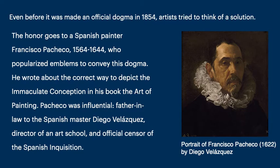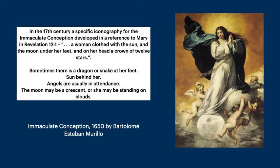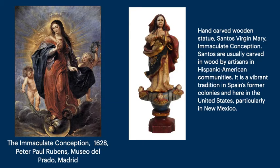Pacheco was very influential — the father-in-law to the Spanish master Diego Velázquez, director of an art school, and maybe even more importantly, official censor of the Spanish Inquisition. He said to communicate the idea of Immaculate Conception, a woman should be clothed with the sun, the moon under her feet, twelve stars, a dragon or snake at her feet, sun behind her, and usually angels. Sometimes she's standing on a crescent moon. Here we see an example from the Spanish painter Murillo, a version by the Flemish artist Peter Paul Rubens, and on the right, a hand-carved wooden statue. They're known as Santos, and they're very popular in Hispanic American communities here in the United States, particularly New Mexico.